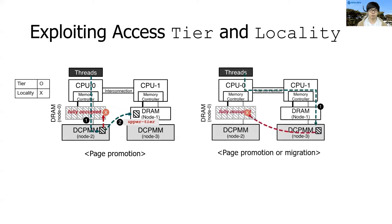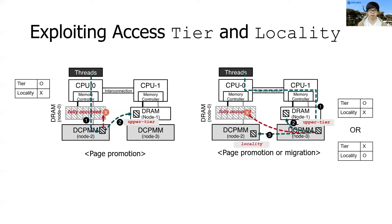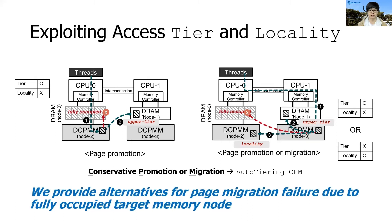On the right-hand side, we provide another example where the accessed pages reside in the remote lower-tier memory. In such a case, we have two options for page placement. First, we attempt page promotion to the remote upper-tier. Although this does not satisfy locality, considering the memory tier is more important than the locality in terms of performance. Second, if the remote upper-tier memory is also fully occupied, we try to migrate the page into the local lower-tier memory. We call this technique auto-tiering with conservative promotion or migration, shortly auto-tiering CPM. With auto-tiering CPM, we can provide alternative promotion and migrations for page migration failure due to fully occupied local upper-tier memory.